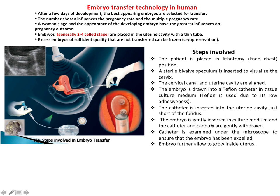The embryos are gently expelled in culture media and the catheter and cannula are gently withdrawn. Here you can see how the embryos are expelled from the catheter into the uterine cavity. The catheter is examined under microscope or ultrasonography to ensure that the embryos have been expelled properly, and finally the embryos are allowed to grow inside the uterus as a normal pregnancy.